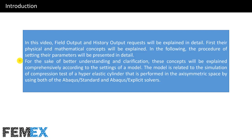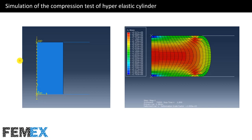The model is related to the simulation of the compression test of a hyper-elastic cylinder that is performed in the axisymmetric space by using both the Abaqus Standard and Abaqus Explicit solvers. This is the model. This is the hyper-elastic cylinder and these are two rigid parts.